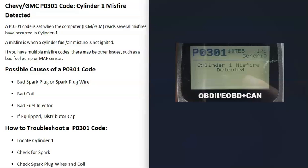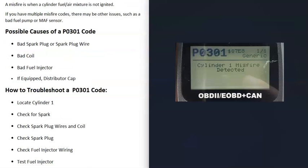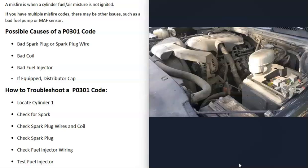Some possible causes of a P0301 code include a bad spark plug, a bad spark plug wire, a bad coil, or a bad fuel injector on cylinder number one. If you have an older Chevrolet or GMC with a distributor cap, it could also be a bad distributor cap.